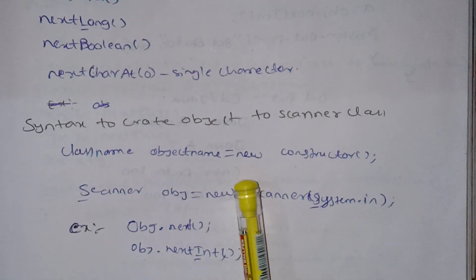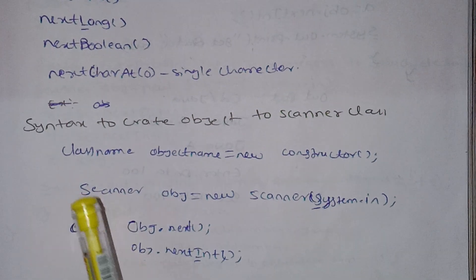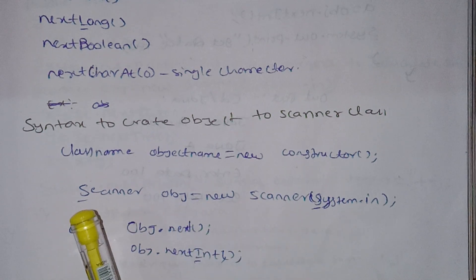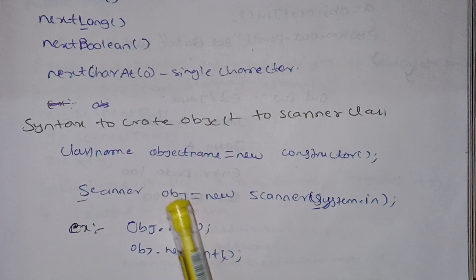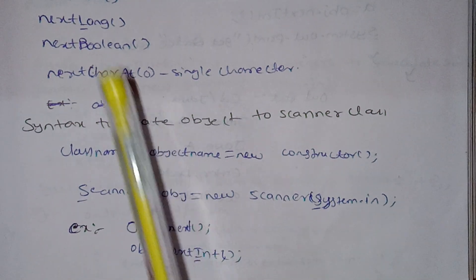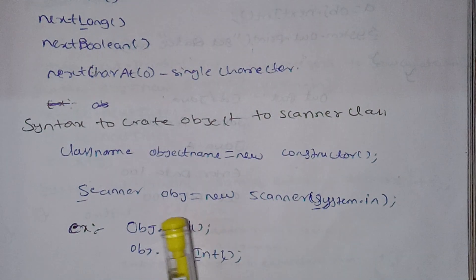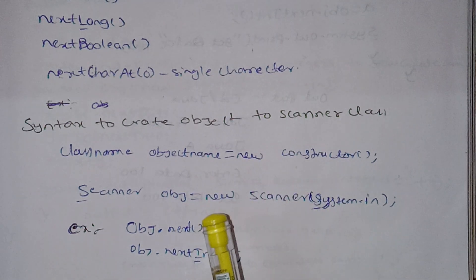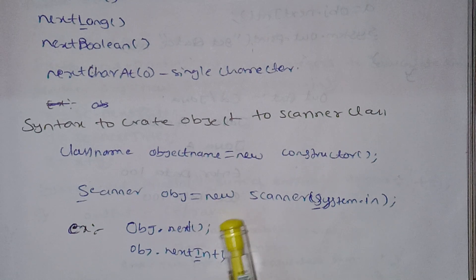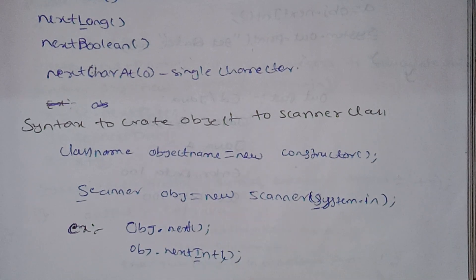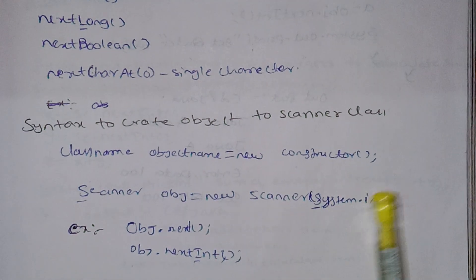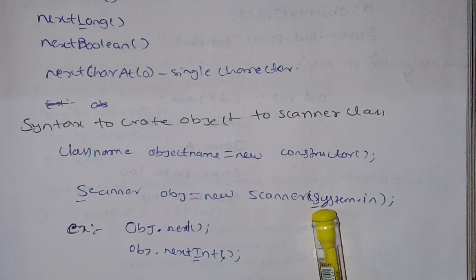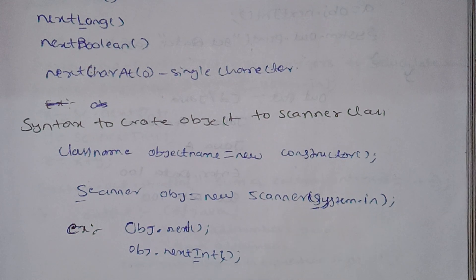The syntax: the class name and object name — object name is equal to new constructor. The class name is Scanner and the constructor is Scanner. We use the object to call methods such as object.nextBoolean(). The new operator is used for memory allocation. We pass System.in as the parameter to the Scanner constructor to read data from the keyboard.